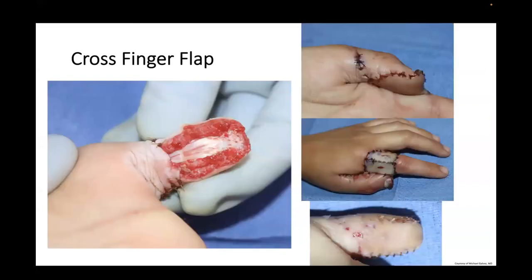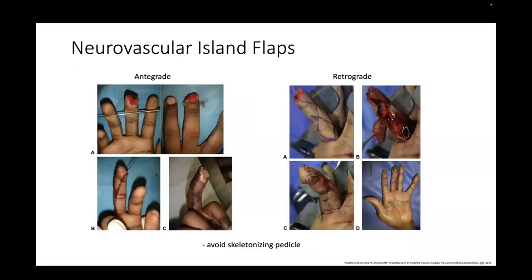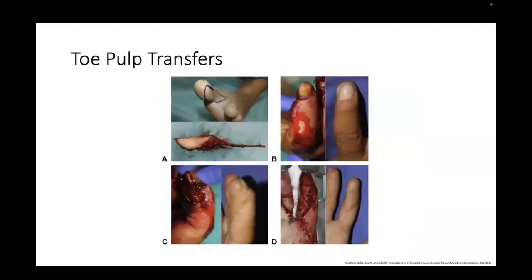A patient shared by Mike Galvez from Valley Children's showed a patient with exposed FPL and bone, covered with a cross-finger flap from the index finger. This could also have been done with a first dorsal metacarpal artery flap, which is sensate. Several neurovascular island flaps have been described. For patients who are inclined, microvascular toe pulp transfers can be considered.